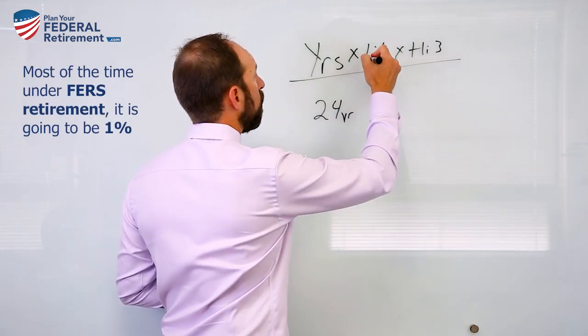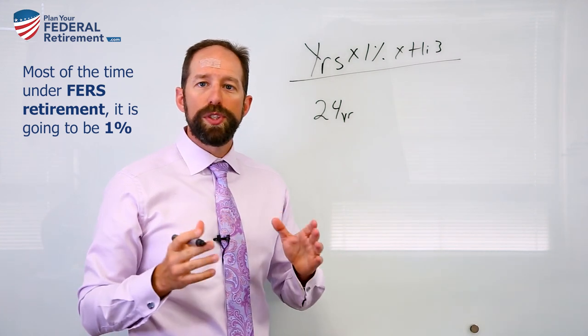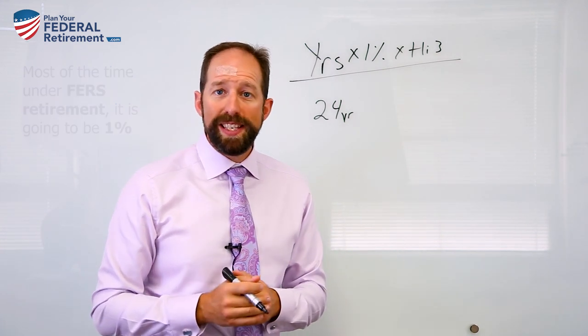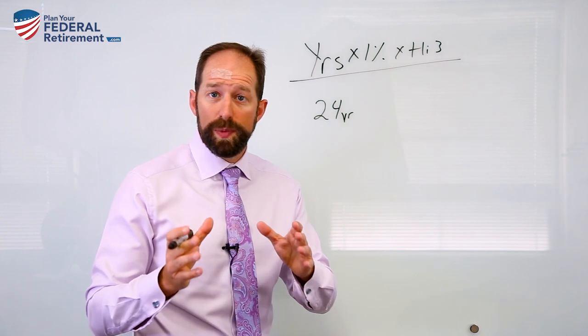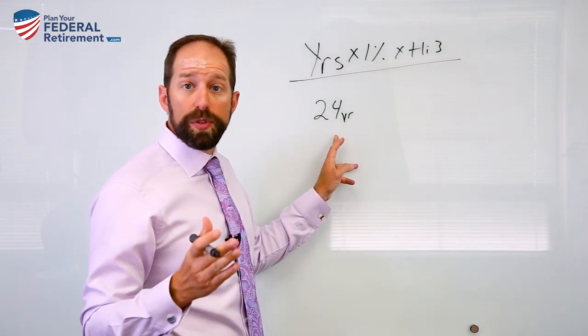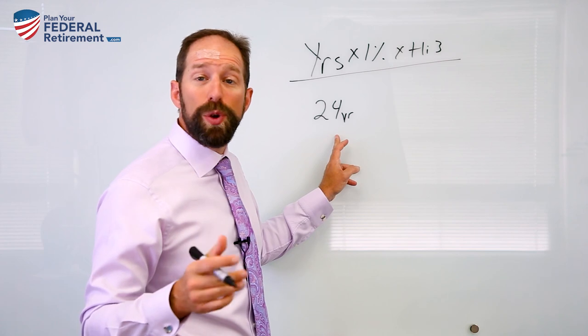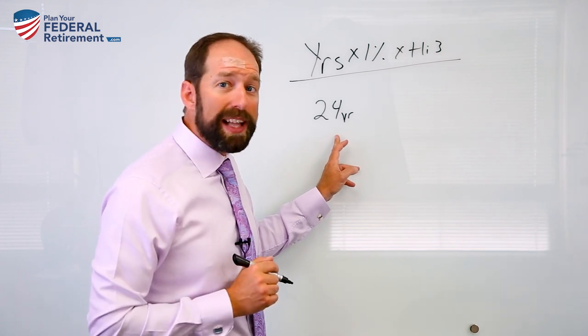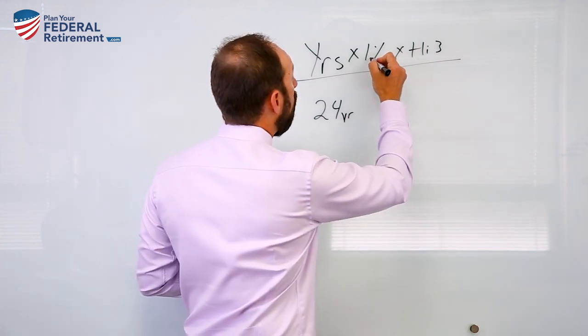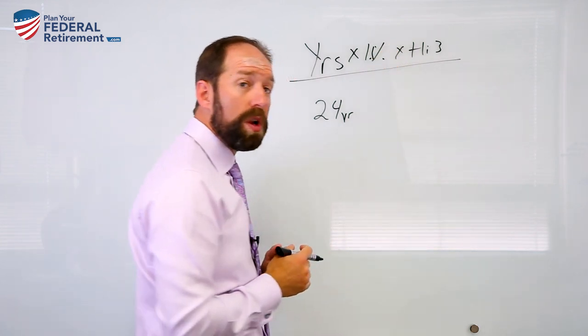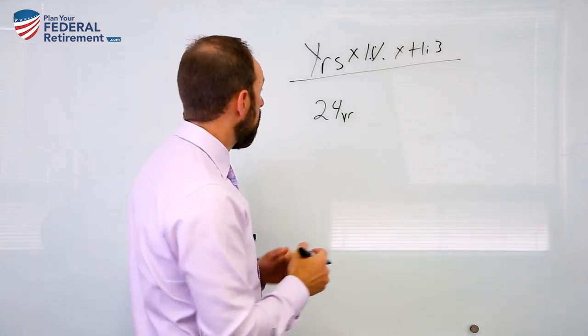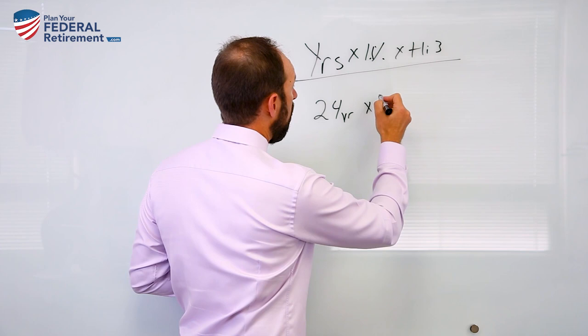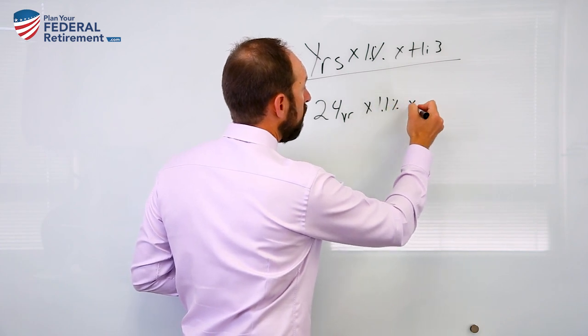Most of the time under FERS retirement, it's going to be one percent. However, in this situation, Tonya's husband has over 20 years of service and is over 62. That means he is eligible for a 10% raise, 1.1% times his years of service. So 24 years of service times 1.1% times his high three.